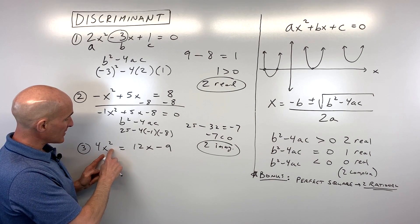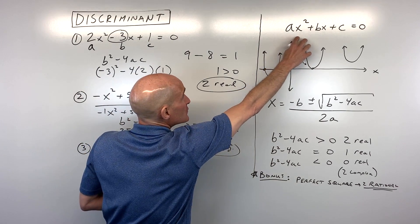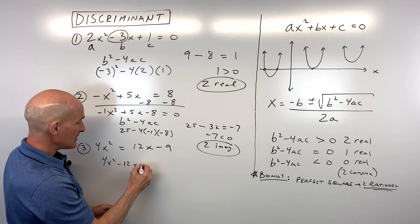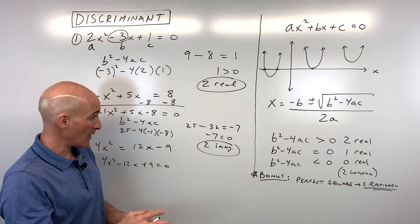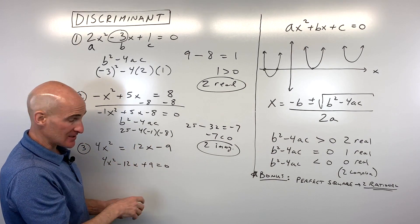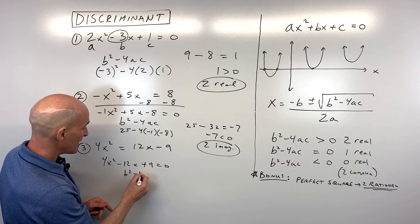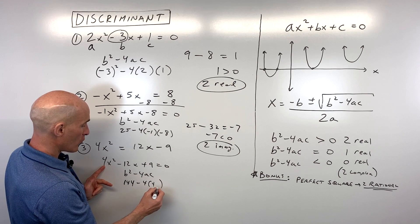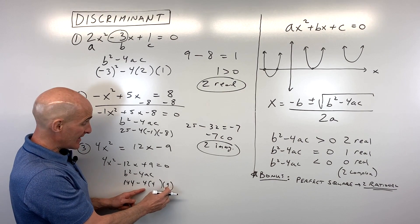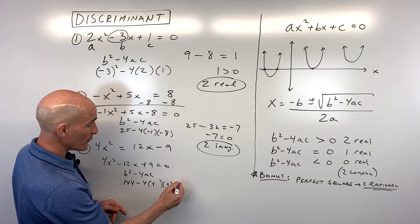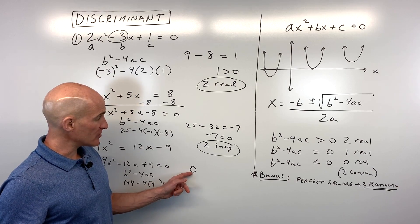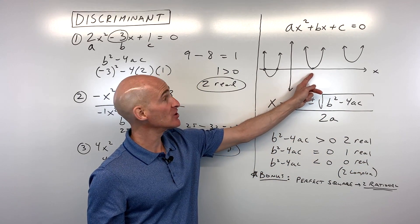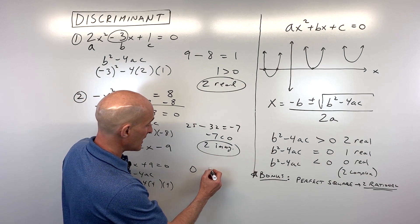For number three, we have 4x squared equals 12x minus 9. We need to get it into standard form, so subtract 12x from both sides and add 9 to both sides to get 4x squared minus 12x plus 9 equals zero. Now our a, b, and c values are identified. Putting into the discriminant: negative 12 squared is positive 144, minus 4 times 4 times 9, which is also 144. So we have 144 minus 144, which is zero. When the discriminant equals zero, that means one real solution — the parabola crosses the x-axis at just one point, at the vertex.